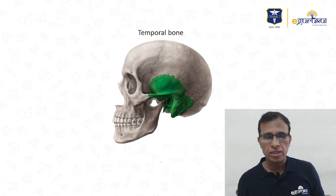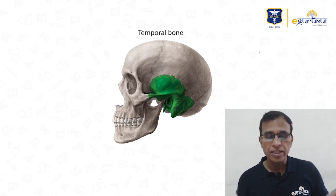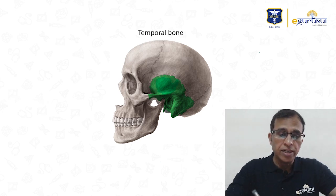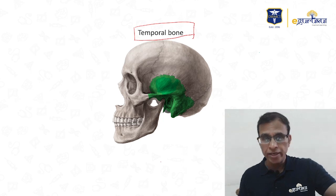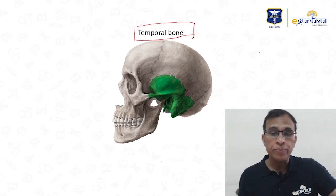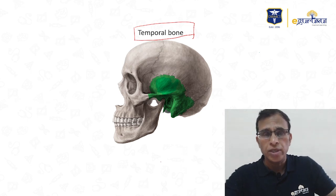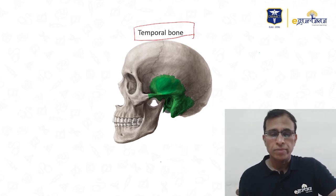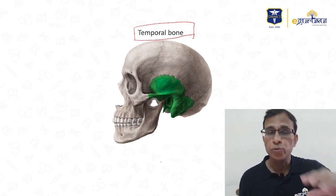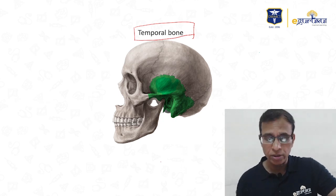The first image shows a skull from outside in the lateral view. The green bone is the temporal bone. In ENT, the temporal bone is the most important bone that you have to know and you should be able to recognize it. You should be able to identify this bone if they give you an image-based question on temporal bone.